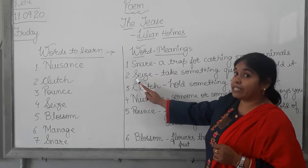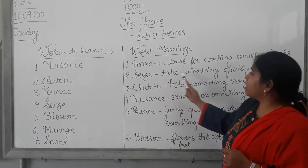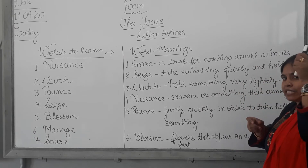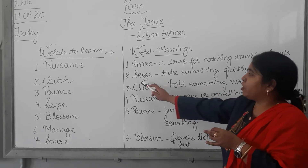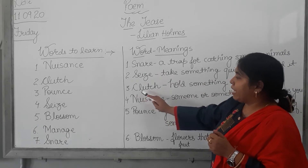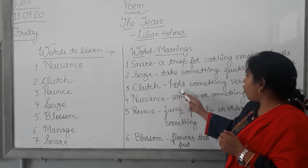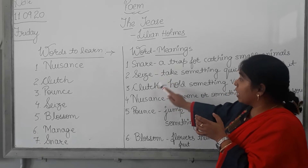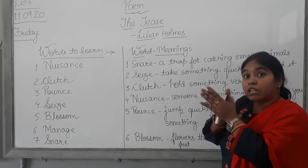The next word is S-E-I-Z-E. And the meaning of this word is: to take something quickly and hold it — like grabbing something in your hand. The meaning of 'seize' is to hold something very quickly. Next, C-L-U-T-C-H, clutch. And the meaning of clutch is: to hold something very tightly. The difference between these two words is: 'seize' means holding something quickly, while 'clutch' means holding something very tightly.